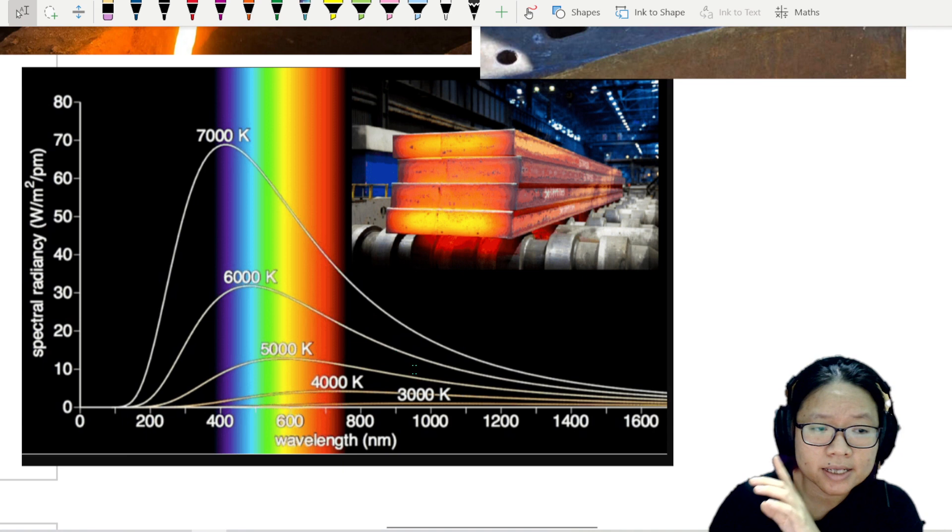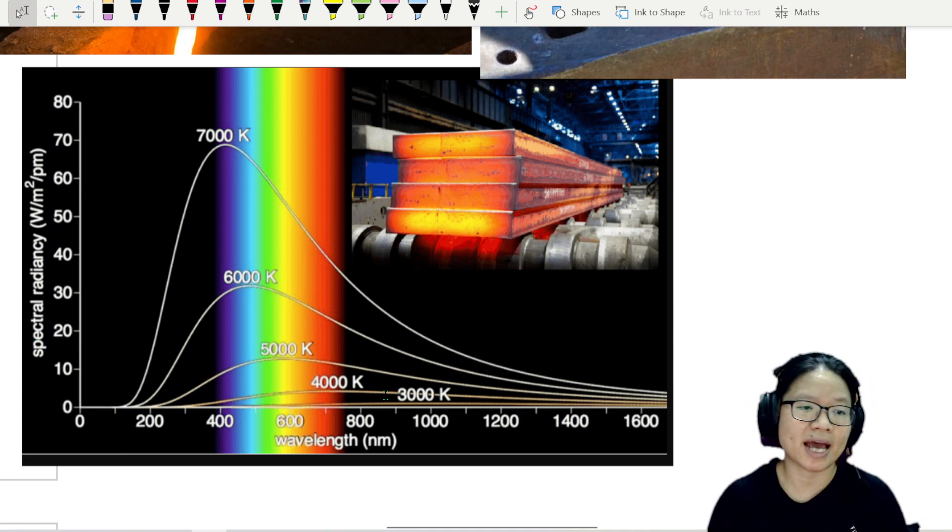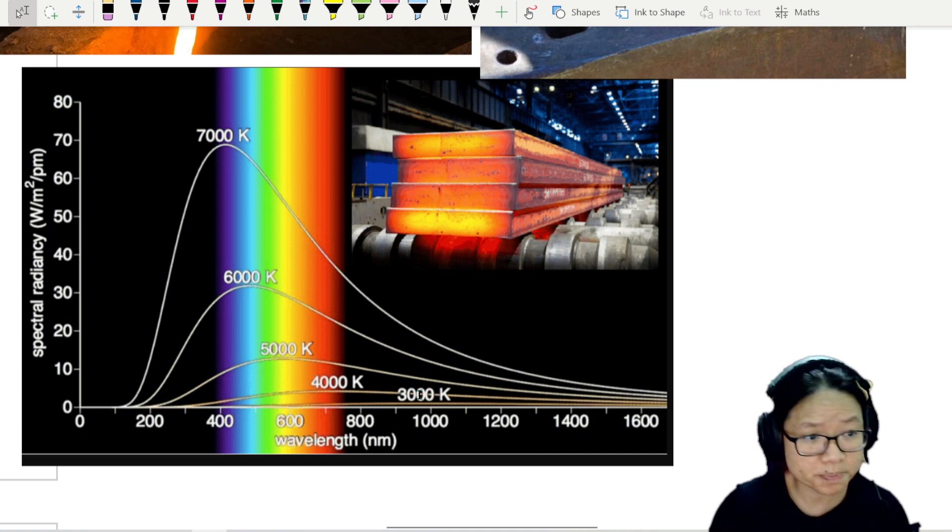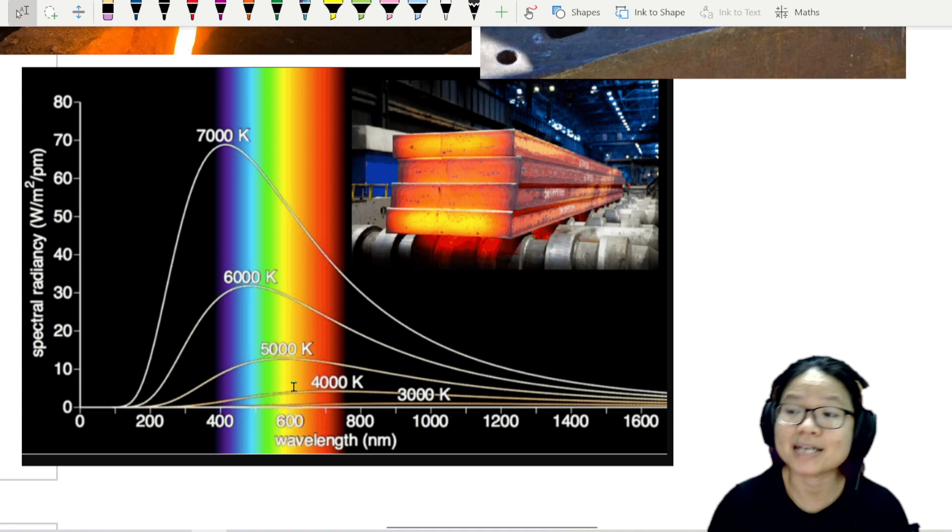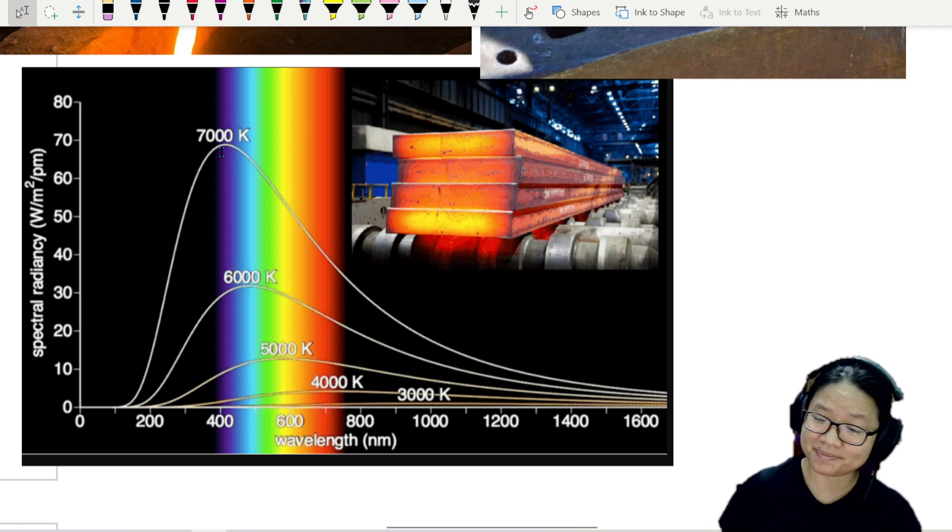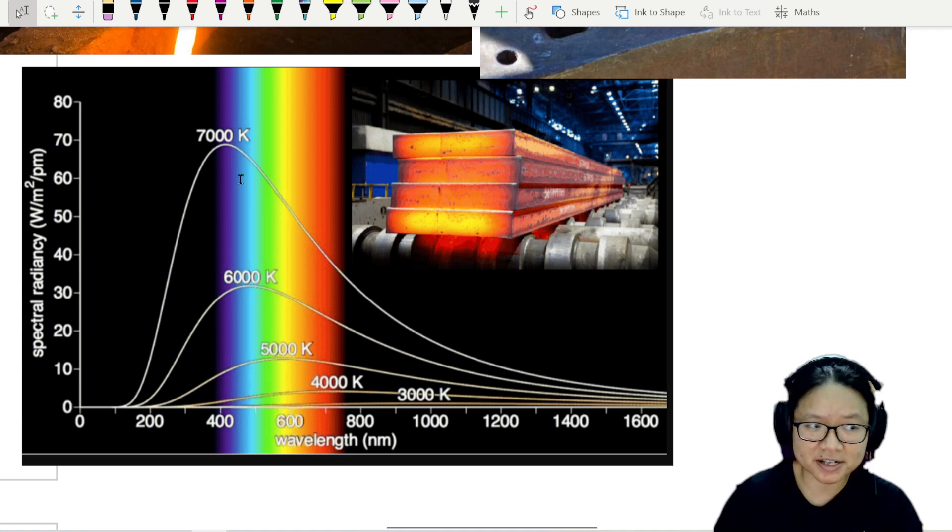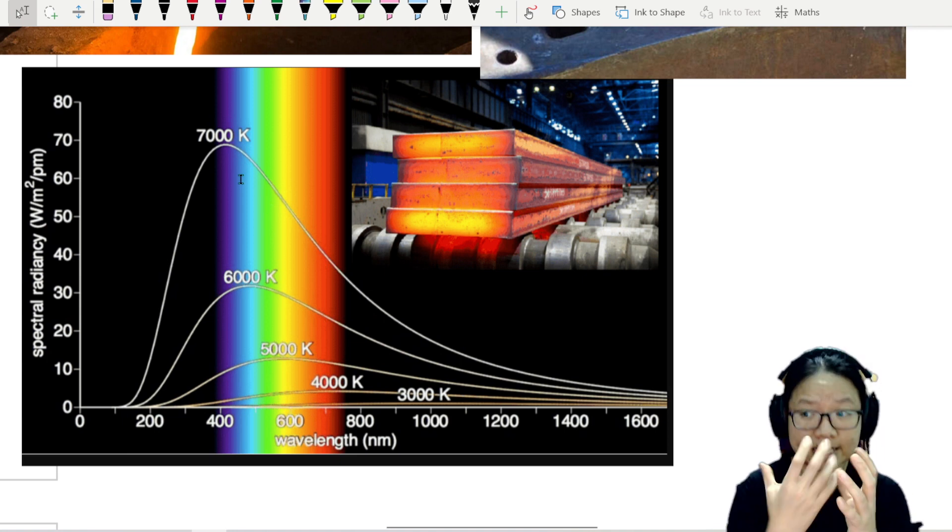The second thing you will notice is the lower the temperature, the lower the overall intensity. So the y-axis is intensity. If you are looking at a 3000 Kelvin temperature, the peak wavelength is around red. But if you look at 5000 Kelvin, the peak wavelength is around green, 6000 Kelvin blue. That's why yellow flame is less hot than blue flame, which is less hot than violet flame. So you can tell that the wavelength of light is affected by the temperature of the object.